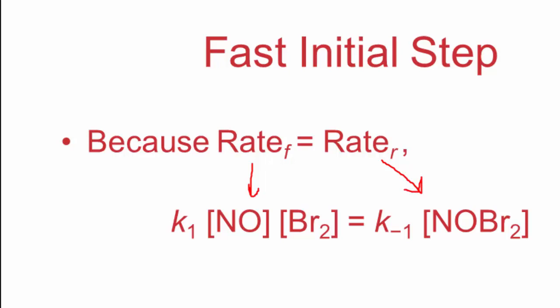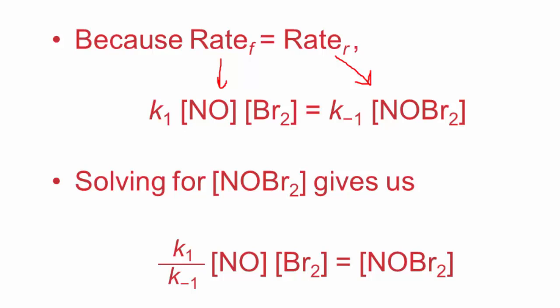Now what we want to do is substitute in for NOBr₂. So basically what we're going to do is divide both sides by K₋₁. When we do that, we get a concentration NOBr₂ is equal to all this. So basically what we're going to do is take all of this and plug into that initial rate law we wrote with NOBr₂. So we're going to have, instead of NOBr₂, we're going to get rid of this and all of these substances will be plugged in for that.